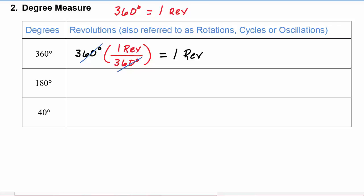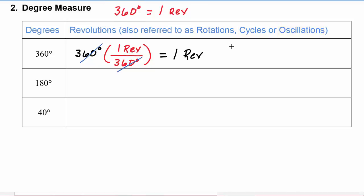We could also refer to this as one rotation, one cycle, or one oscillation. On the circle, what we're saying is that our object started at a point on the circle and went all the way around, so that's the one revolution or the 360 degrees of travel.